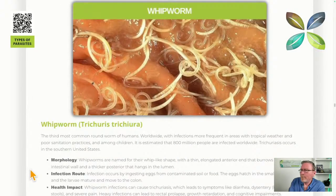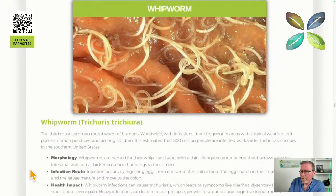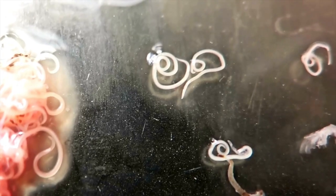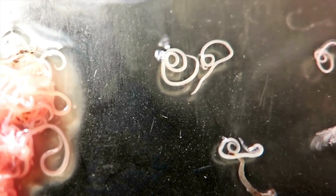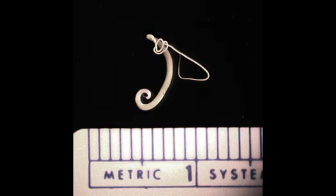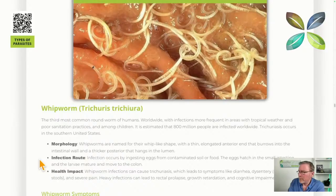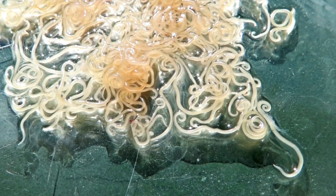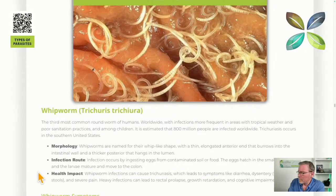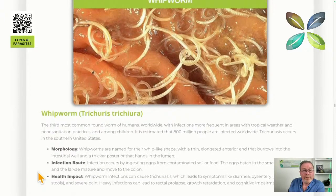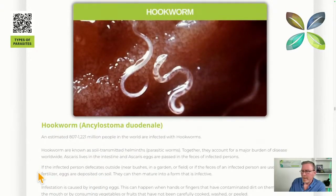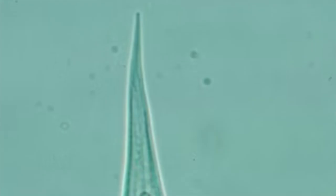Most parasites leave you feeling drained, tired, excessively hungry, and irritable — those are the most common symptoms. Whipworm (trichuris trichiura) is fairly similar to pinworm but with more of a hook and spiral effect. These are also ingested as eggs from contaminated food or soil; they hatch in the intestine and can cause dysentery, diarrhea, and bloody stools.